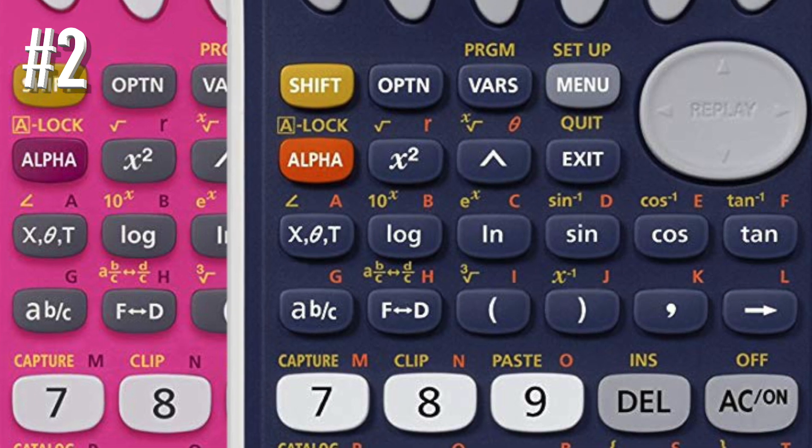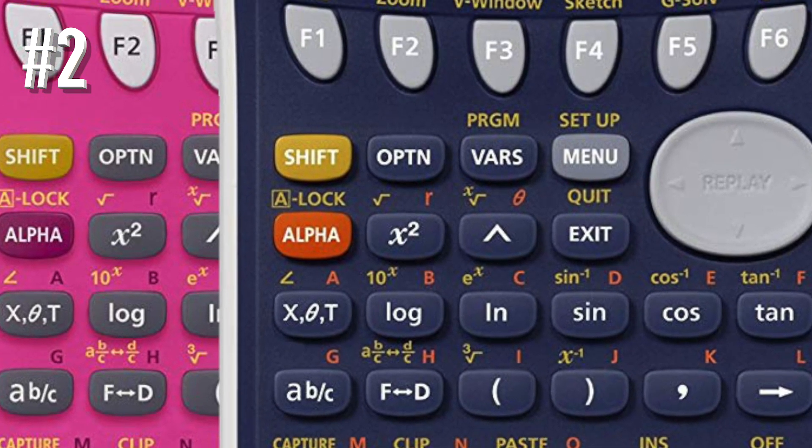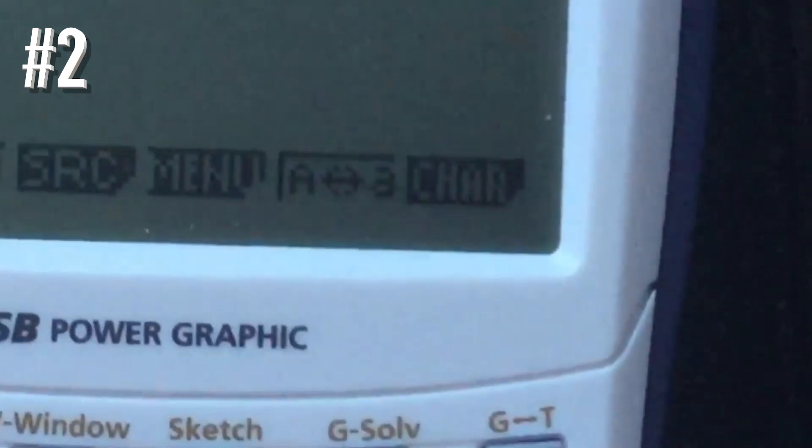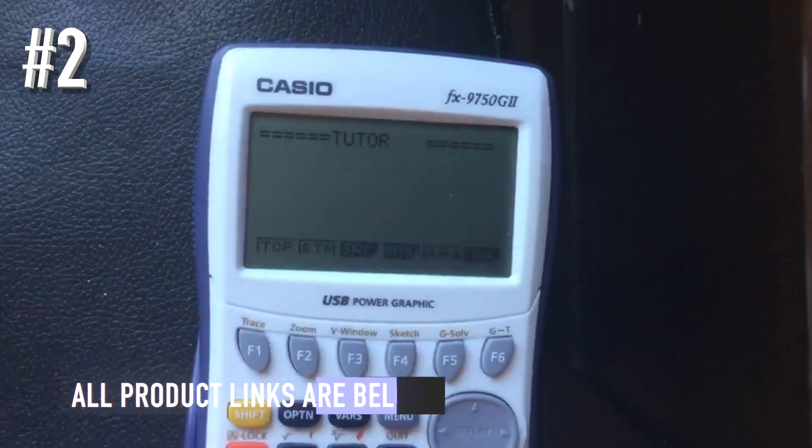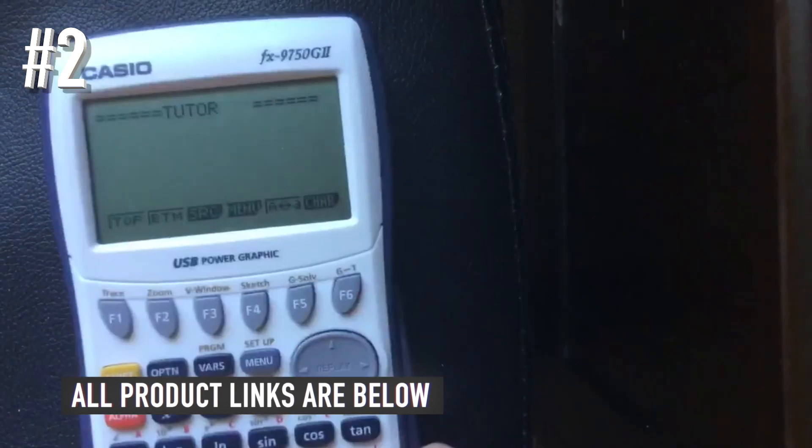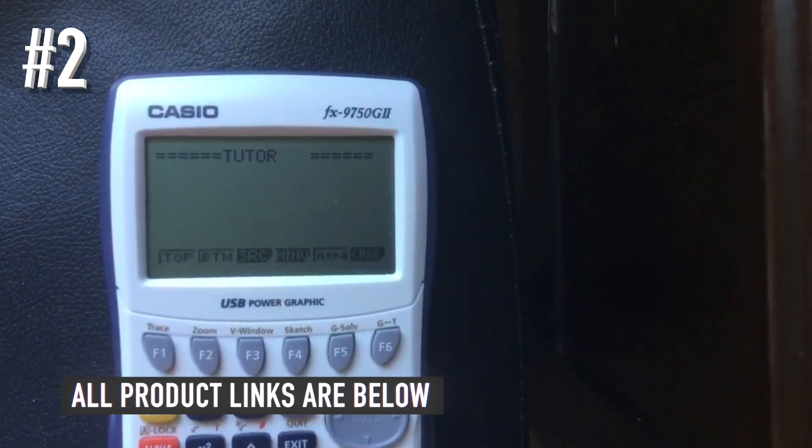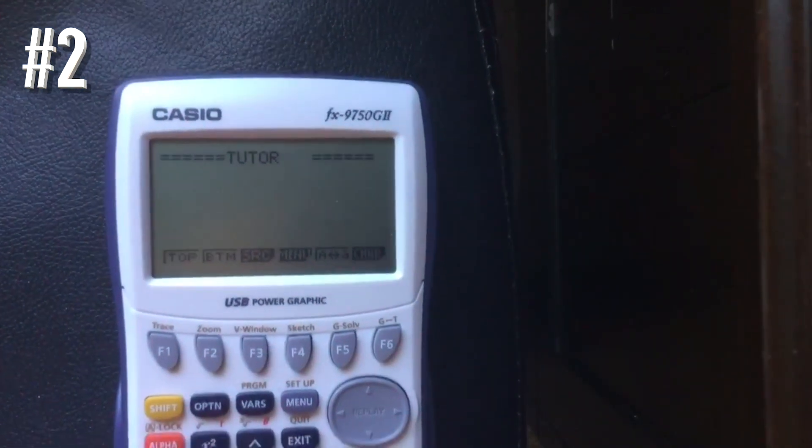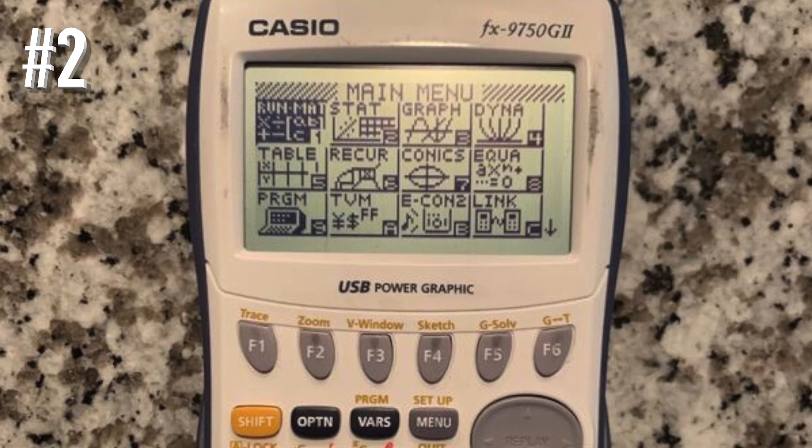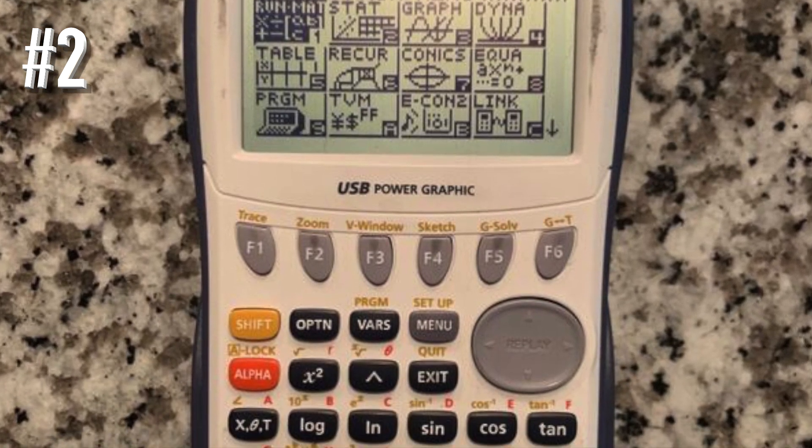Speaking of test time, test takers can also benefit from the Casio Graphing Calculator. It's approved for use on the PSAT, SAT, and college entrance exams, as well as AP tests. The FX 9750G2 requires four AAA batteries and includes built-in USB functionality for connecting with other devices.